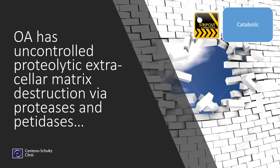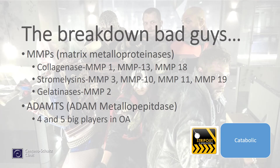These are things that will break down parts of the cartilage. We have specific breakdown chemicals — MMPs or matrix metalloproteinases, with many different types existing in the knee, and ADAM metallopeptidases — these are the bad guys that break things down.